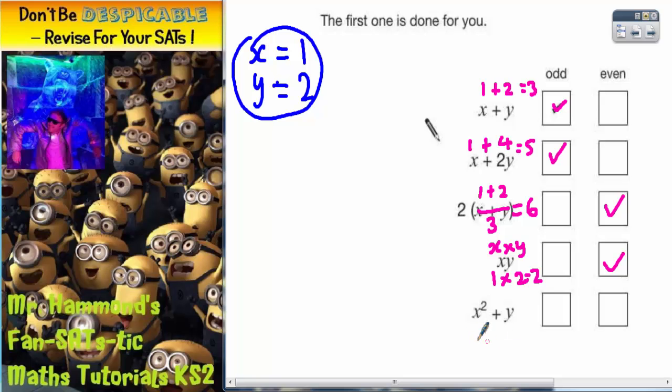On the final expression, we've got x squared plus y. Well, x squared, if x is 1, we're saying 1 squared added to y, which is 2. So 1 squared is 1 plus 2 is 3. And 3 is odd. So the final box we've got to tick will be odd.